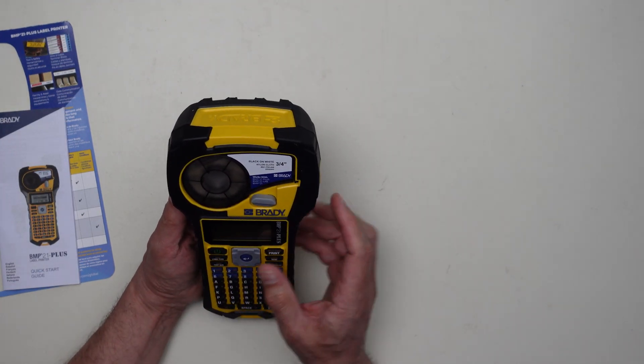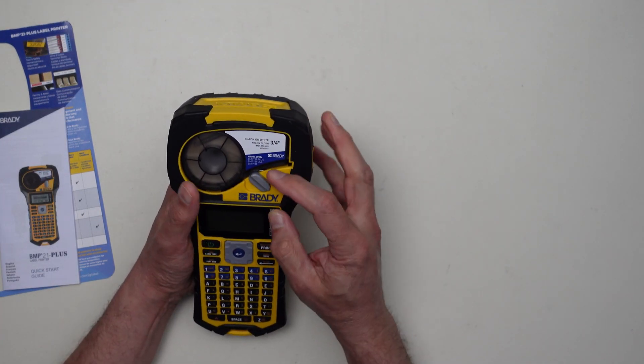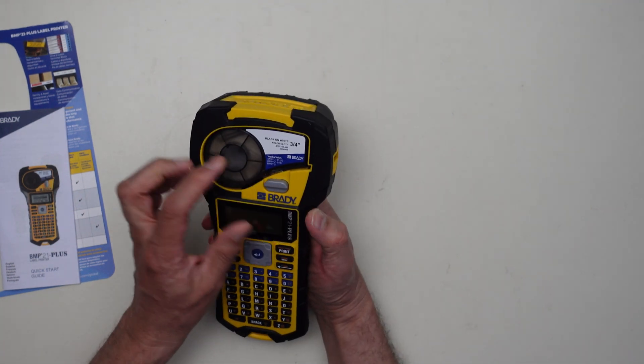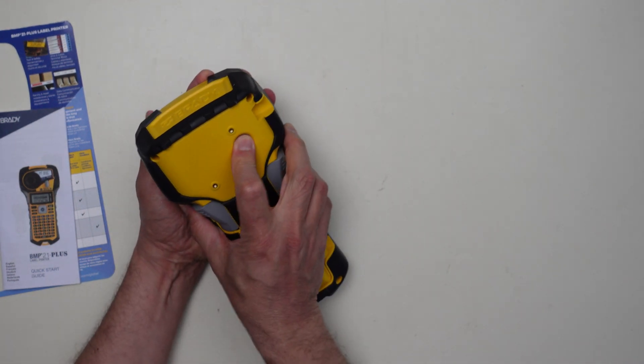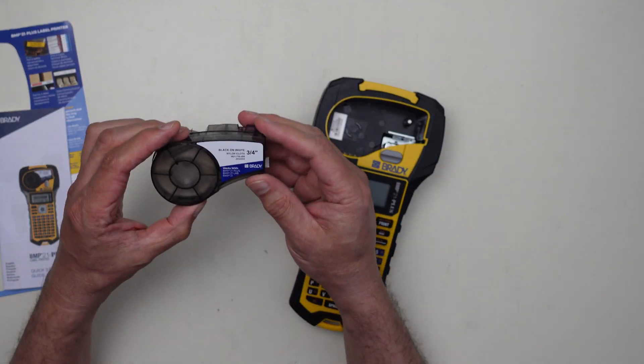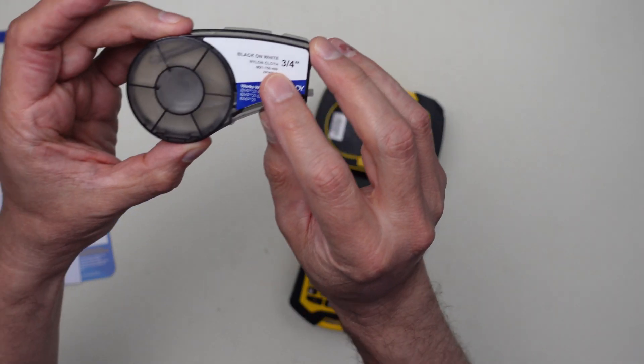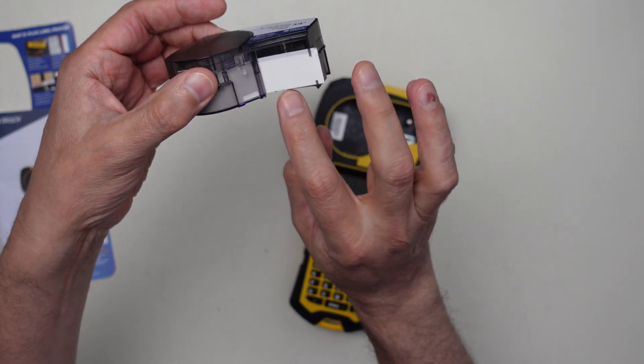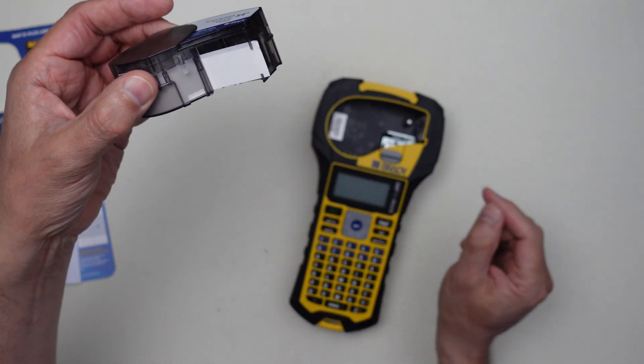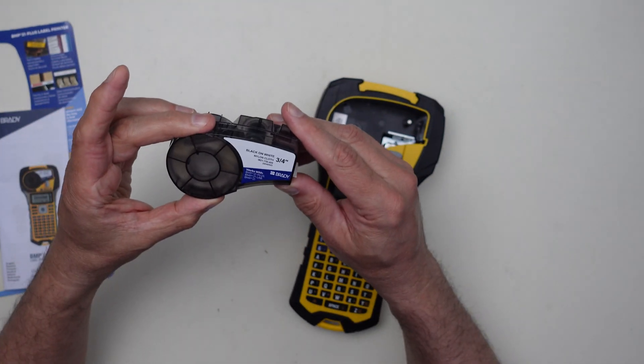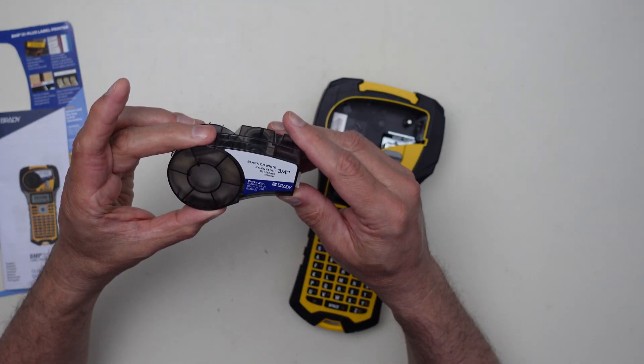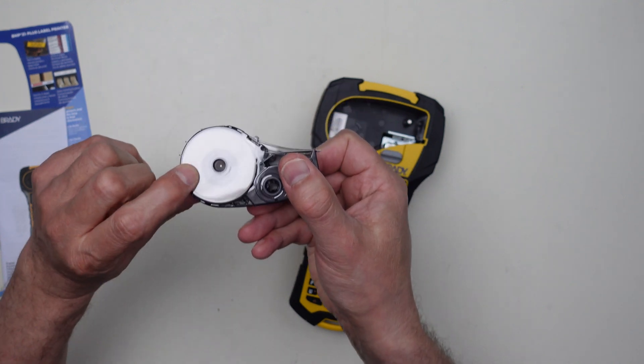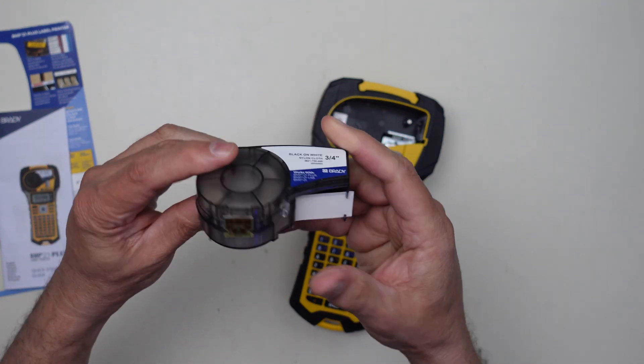And here's what I believe is the quick start manual, and then the printer itself. I'll open that up and then take the cartridge out by making sure that's open and push this button in the back here. It comes with cloth, nylon cloth, three quarter inch, and it can hold like four lines of text on each label. You can wrap that around the cable itself. This particular one looks like it has a full cartridge.